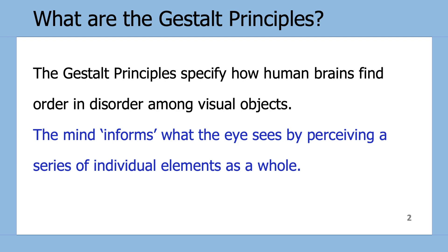Well, they are a set of principles that specify how a human brain finds order and organization among disorder in visual objects. The human brain informs the eyes by perceiving a series of individual elements in a visualization as an overall whole.